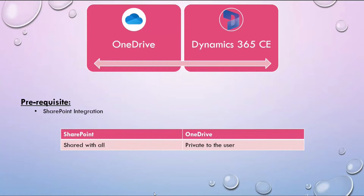If we already have SharePoint integration in place, why do we need OneDrive integration? When you upload a document to a SharePoint location, everyone in that team SharePoint site will be able to access the document. But if you want to upload a document that should be private to you, then you need to go for OneDrive. When you upload a document to your OneDrive location from Dynamics, only you will be able to access it unless you share it with another user.